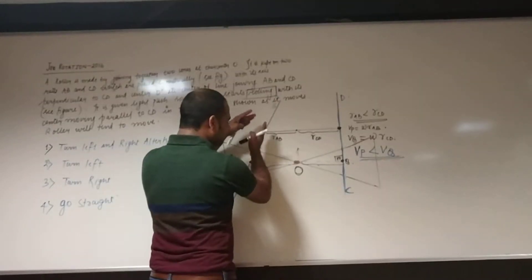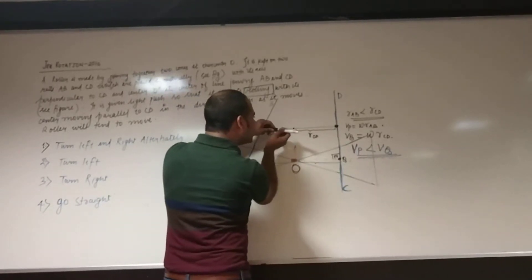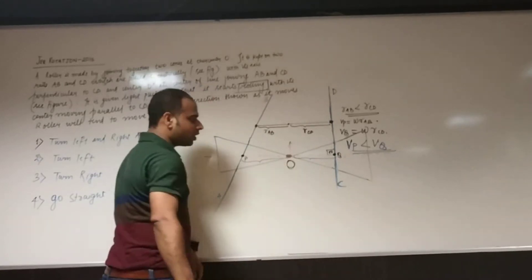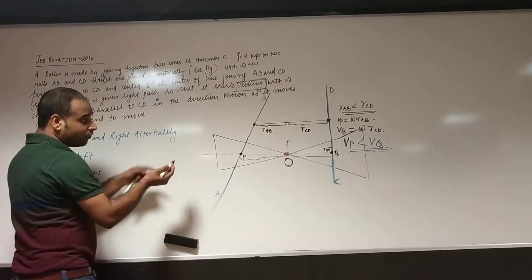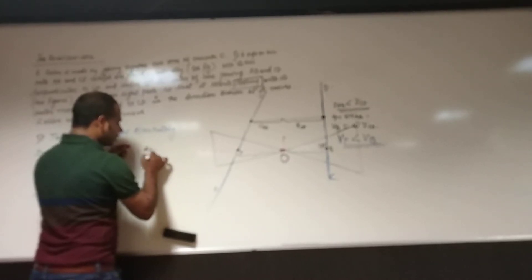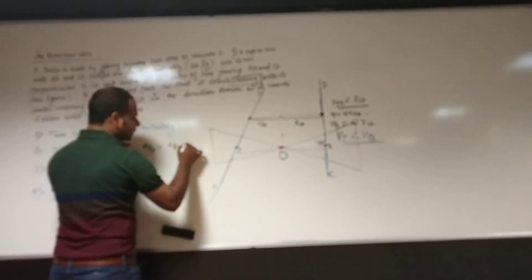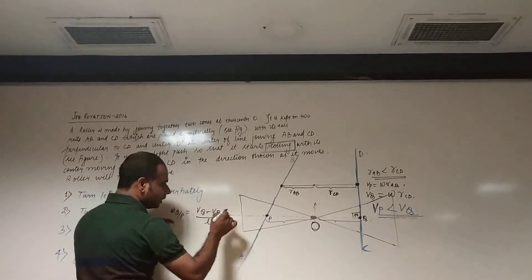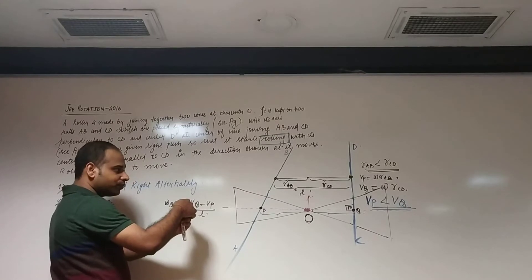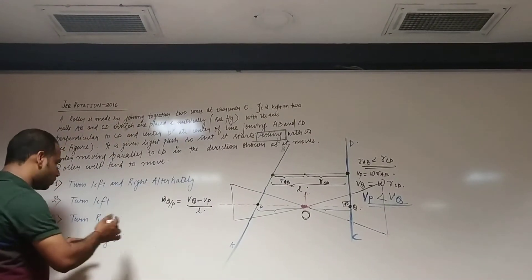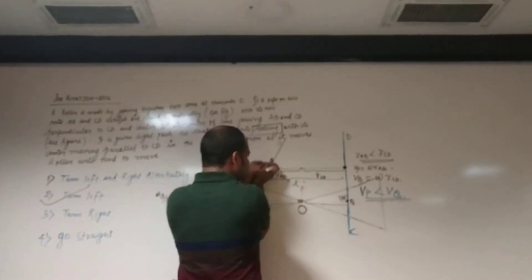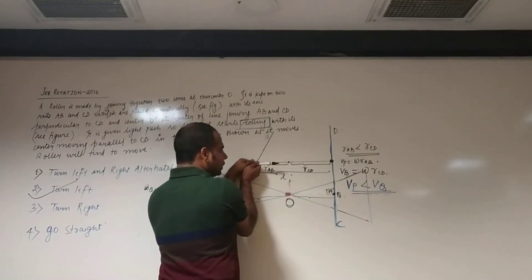Since the velocity of P is less than that of Q, the roller will obviously be turning towards left. We can also find the angular velocity of Q with respect to P as (VQ minus VP) divided by the distance L between them, which comes out positive, confirming it is rotating that way. So the dumbbell — the two-cone system — will turn towards left, because Q has greater velocity and P has lesser velocity.